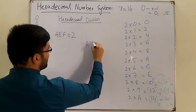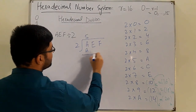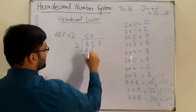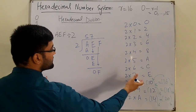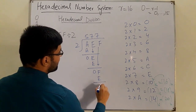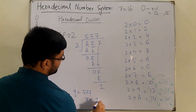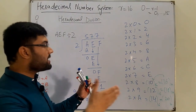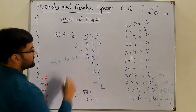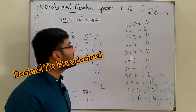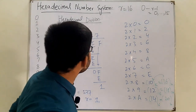Performing the division AEF ÷ 2: A ÷ 2 — 2×5=A — so 5 with remainder 0. Bring down E. E ÷ 2 — 2×7=E — so 7 with remainder 0. Bring down F. F ÷ 2 — the closest is 2×7=E — so 7 with remainder 1. The quotient is 577 and the remainder is 1. The same long division method applies, but you must know how to convert hexadecimal to decimal.